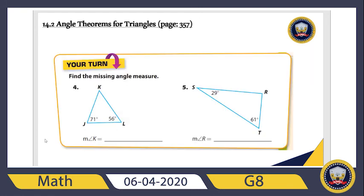Now it's your turn — find angle K in this example, and angle R in the next one. Stop the video and try before checking my answers. For K: 75 plus 56 plus measure of K equals 180, which gives K equals 53 degrees. For R: 29 plus 61 plus measure of R equals 180, so R equals 180 minus 29 minus 61, which is 90 degrees. This triangle has a right angle at R, making it a right triangle.